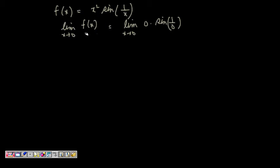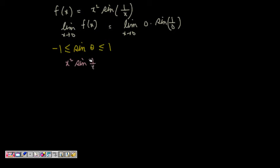What can be done? If we look carefully, we know that for any angle θ, sin(θ) is greater than or equal to -1 and less than or equal to 1. Hence we can write that x² sin(1/x) is greater than or equal to -x² and less than or equal to x², since the minimum value of sine is -1 and the maximum is 1.